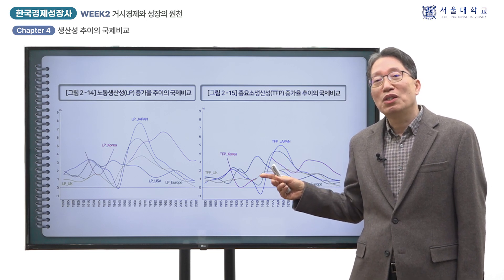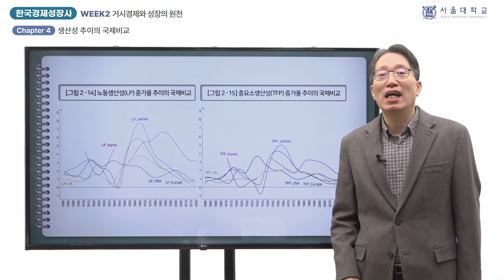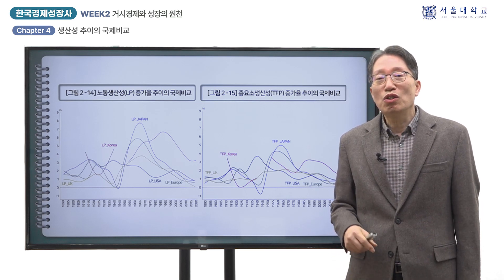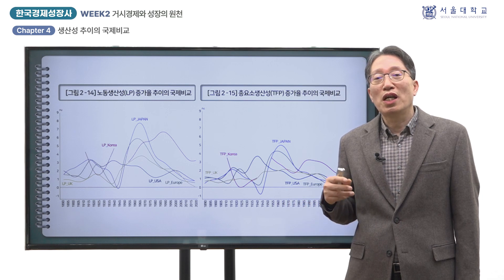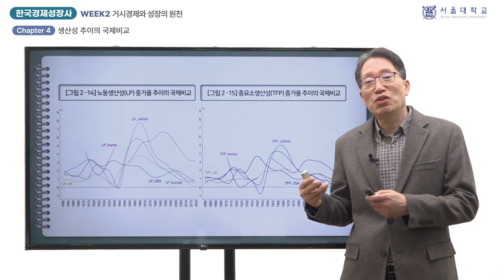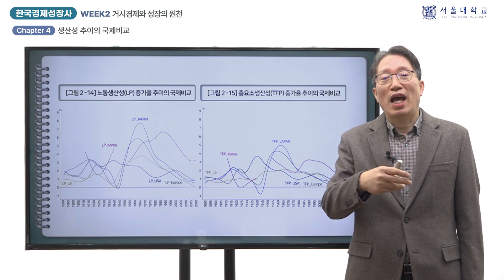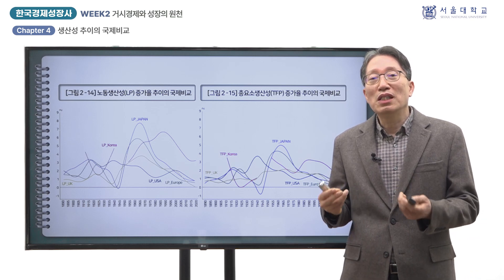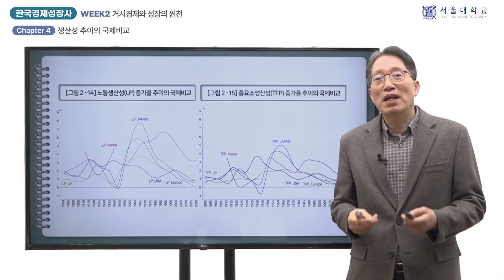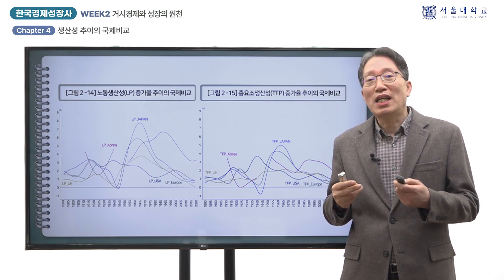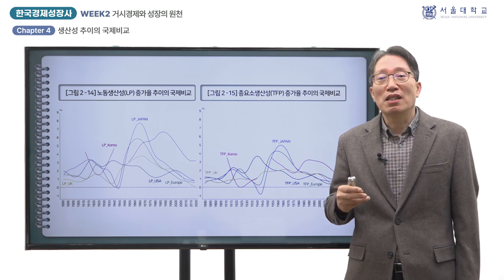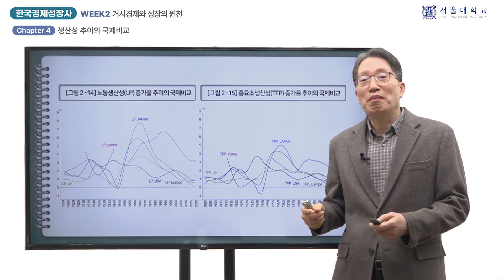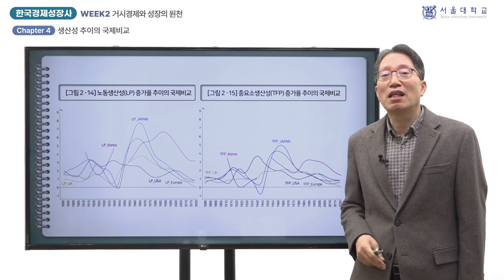이에 대해 한국은 해방과 분단, 6.25 전쟁으로 인한 정치적 혼란이 컸을 뿐만 아니라 교육의 보급이 늦어져 인적 자본 형성이 뒤처져 있었습니다. 1950~60년대에 초등교육의 의무화가 실시되었지만 전체 인구의 평균 수학 연수가 높아지는 데에는 상당한 기간이 소요됩니다. 즉 선진국과의 기술 격차가 있다고 해서 후발성의 이익을 향유하려면 사회적 능력의 축적이 필요하며, 이것이 유럽·일본과 비교한 한국의 생산성 추이에 시차가 나타난 이유입니다.